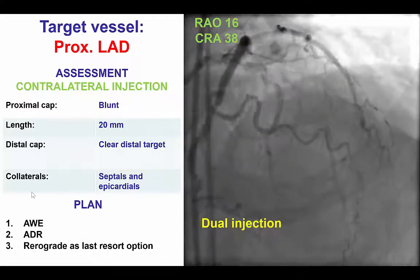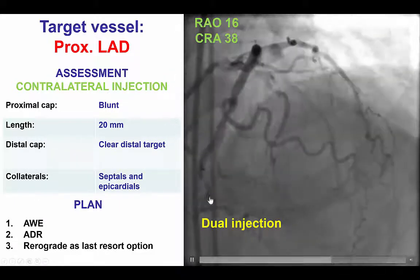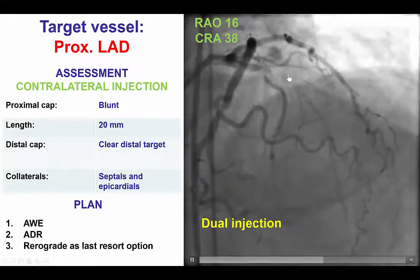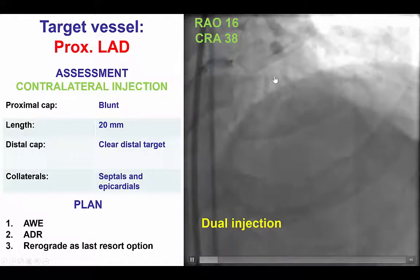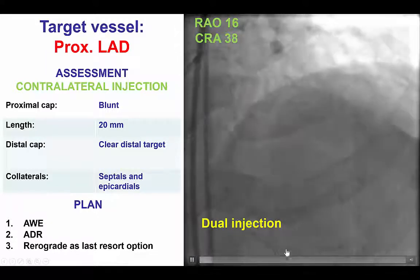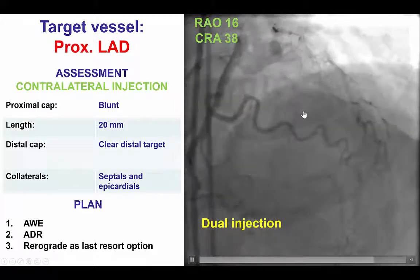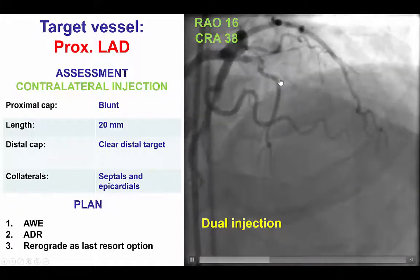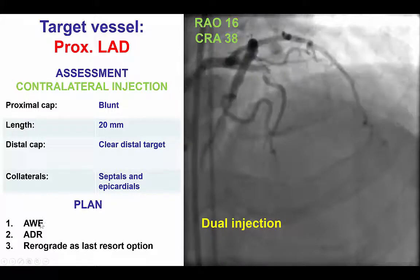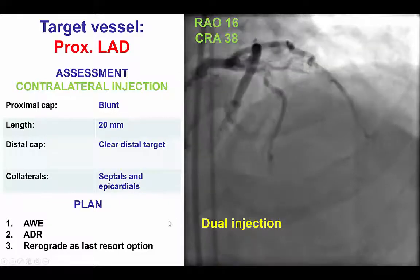We then decided to insert a second guide catheter despite the lack of collaterals in the previous angiogram, and sure enough, after we injected from the right coronary artery, there is now a nice filling of the LAD. We can see that there is actually a fairly short occlusion of about 20 mm, a good quality distal target, and both septal and epicardial collaterals supplying the mid-LAD. This transformed the case from a very challenging and risky procedure into a much simpler one, where antegrade wire escalation was the first approach, followed by antegrade to subintimal re-entry, with retrograde left as a last resort option.